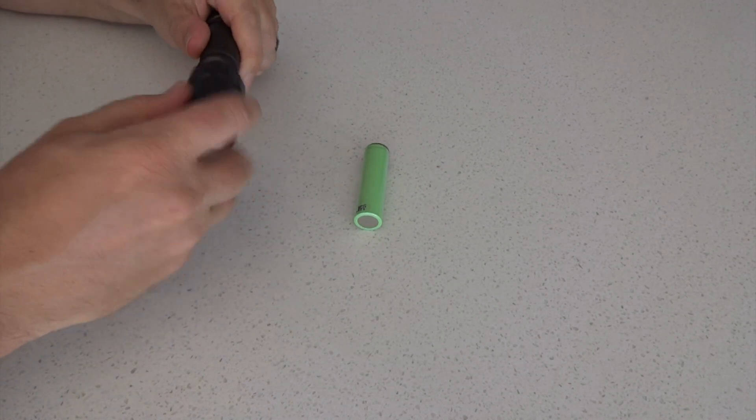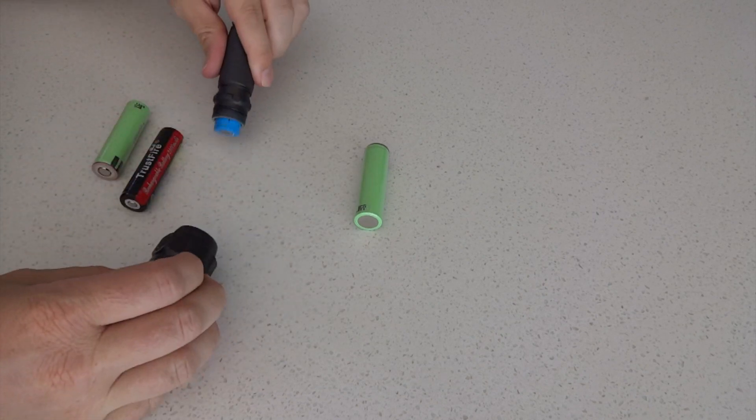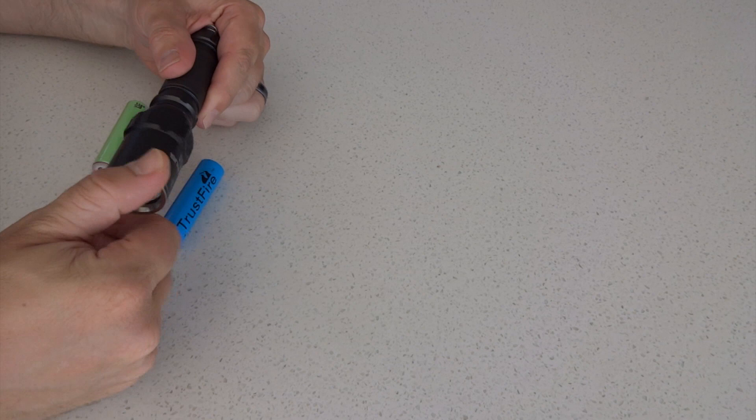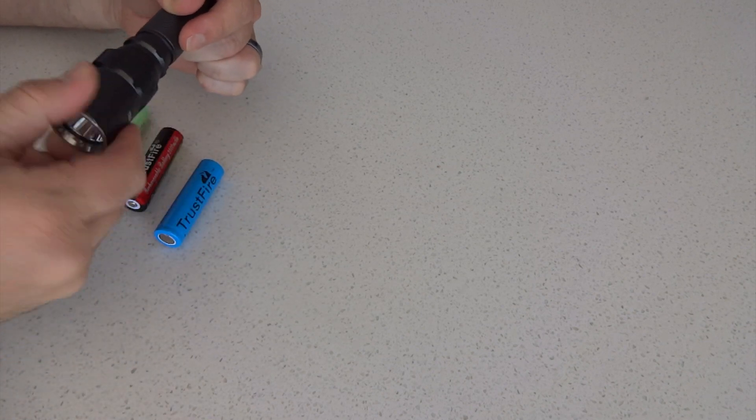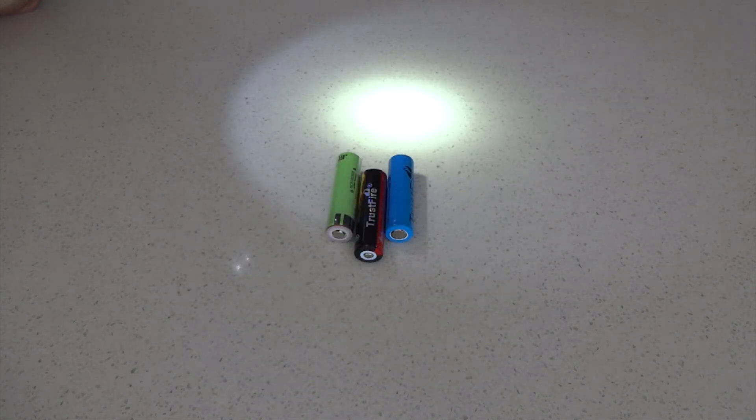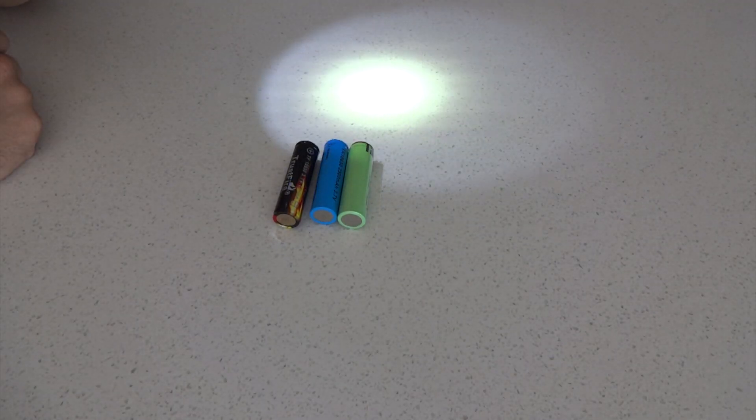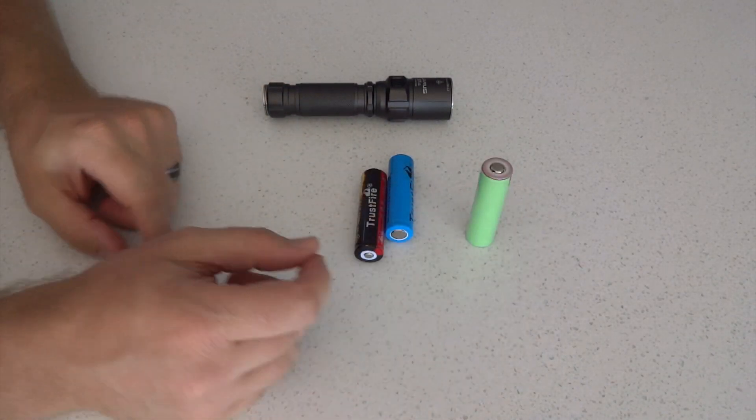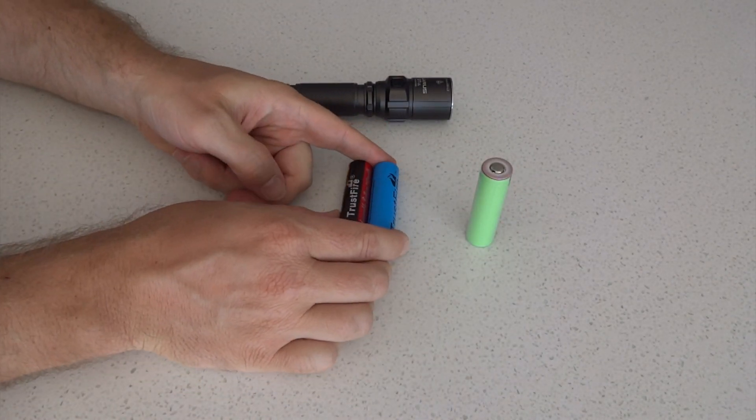I've put in the brand new Panasonic one. The other one was pretty much half charged, I used it for about an hour and a half. We can see that it's pretty much the same as the first one was. And we can see that no matter if it's fully charged or if it's half charged, the Panasonic battery is producing the amount of voltage that it should be.